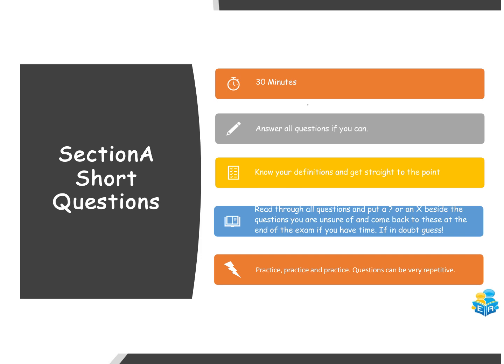Some tips for the short answer questions: I'd generally allocate about 30 minutes out of the three hours for this section. You only have to answer five out of the seven questions, but I'd recommend answering all of them if you can, because your best five will be scored. A lot of the time, one word or very few words are sufficient for full marks. Know your definitions and get straight to the point — these questions are not room for waffle. The examiner is looking for keywords. Read through all questions, mark the ones you're unsure of, and come back to them at the end. If in doubt, guess, because a blank guarantees no marks. And practice, practice, practice — the questions are very repetitive across exam years, so try every past paper and mock you can get your hands on.